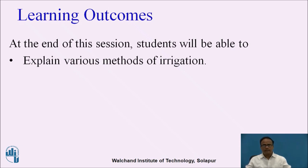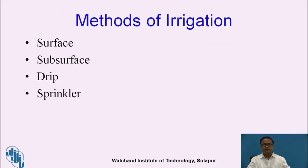The learning outcomes. At the end of this session, students will be able to explain various methods of irrigation. Before going to methods of irrigation, we must know what is irrigation. Irrigation is a method of artificial application of water on the surface of ground. It may be by means of gravity or by means of pumping action, that is by lifting methods.